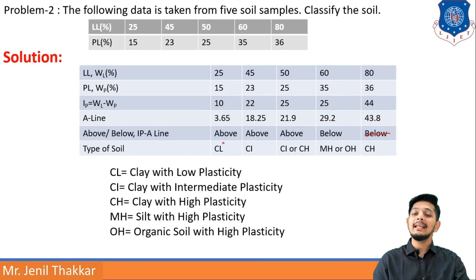Moving forward to types of soil: if it is above then it will be CL. Again it will be CI—why CI? Because the liquid limit is in between 35 to 50, that is 45, so it will be CI.